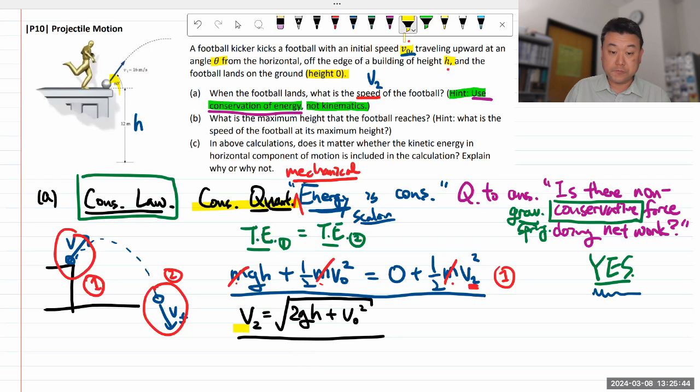So that's the answer. For V2, it took only basically one line of algebra. Compare this to how you had to approach kinematics question. This is a lot simpler. Okay, so let's answer part B.